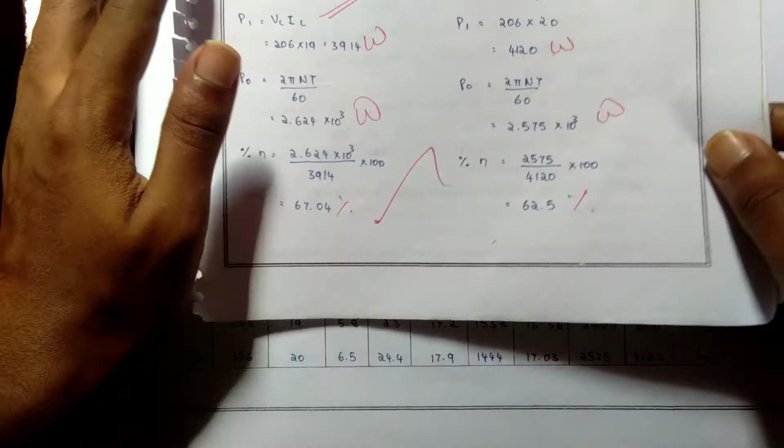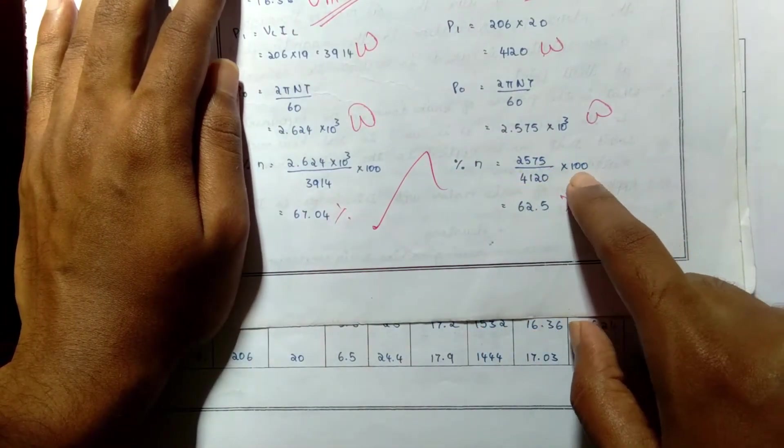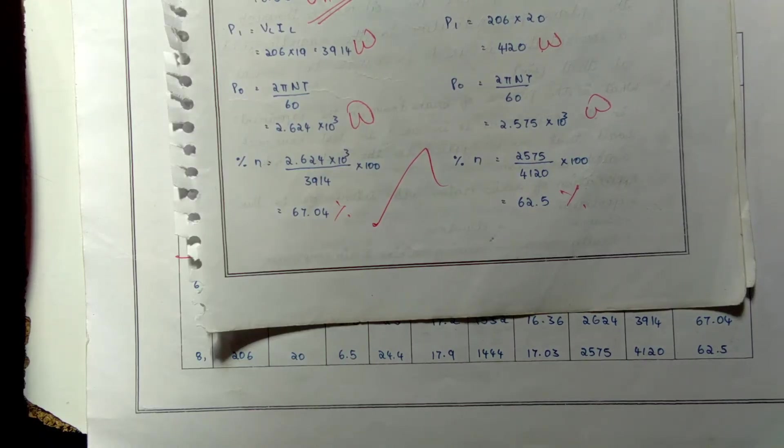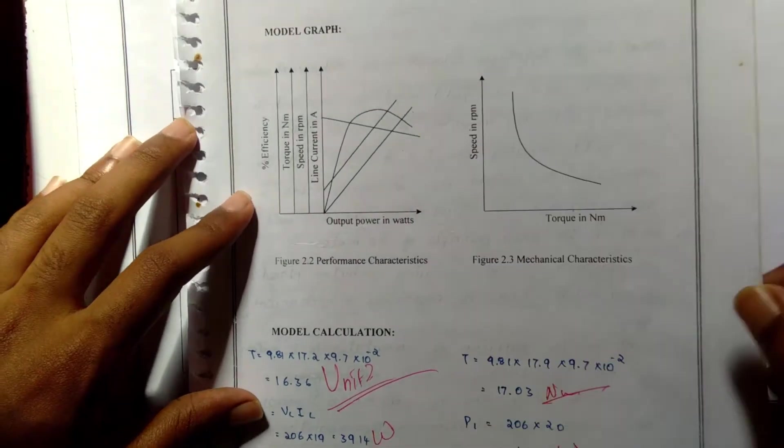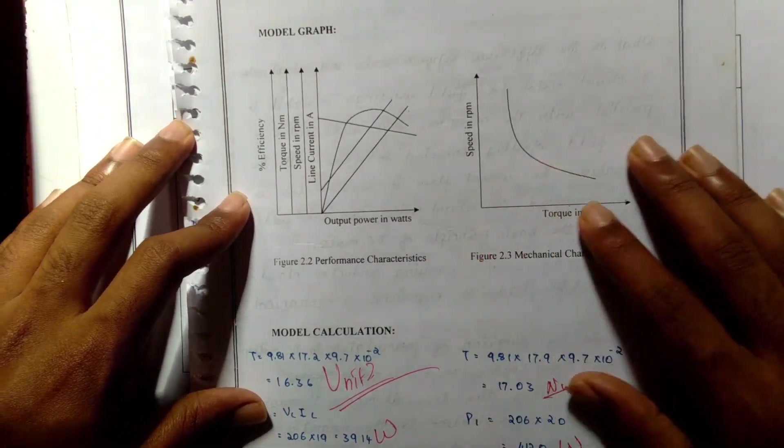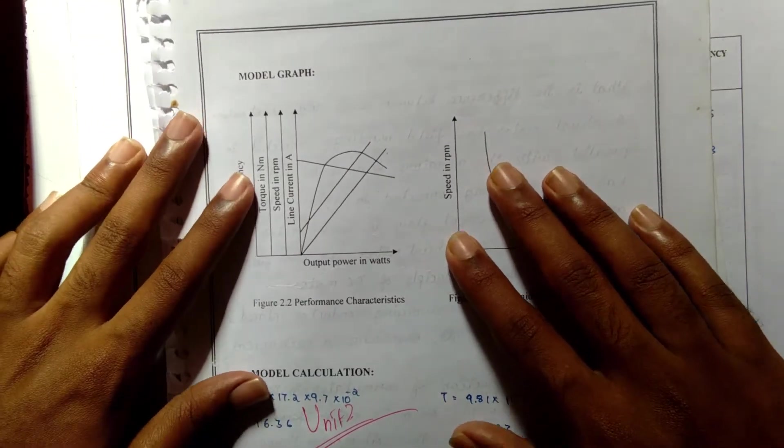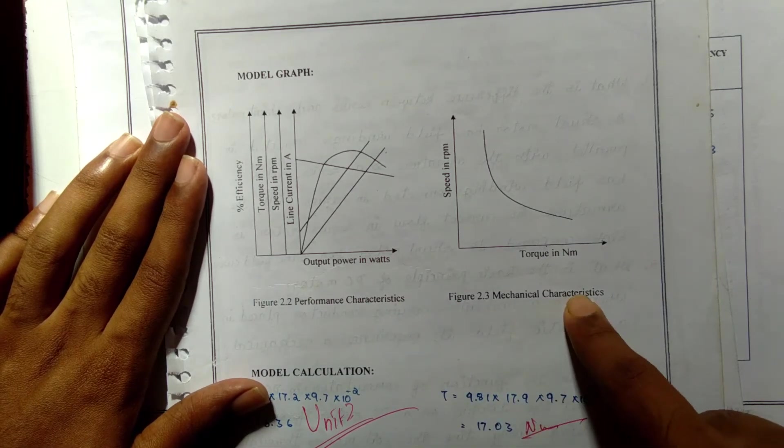After noting down and using the formula, after finding all the values, we should draw these two graphs: the performance characteristics and mechanical characteristics.